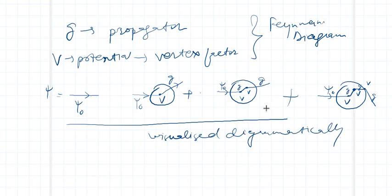So this is all about this lecture. The Born series is essentially an iteration formula. That's all for today's lecture.